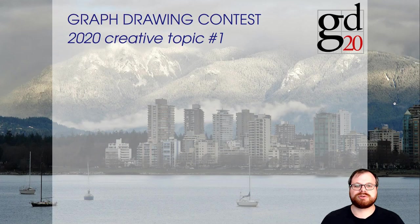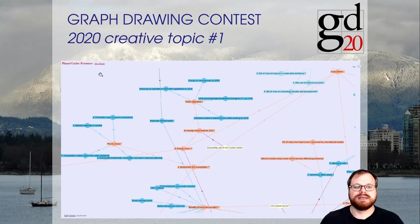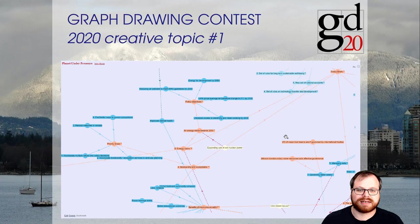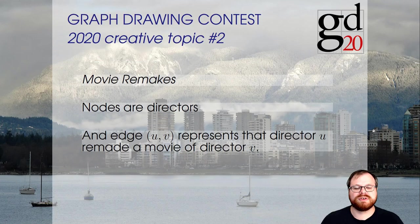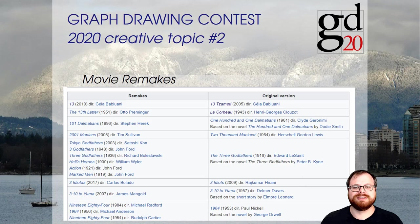The tasks for next year's contest: the first creative topic will be an argumentation map, where nodes are issues, arguments, and facts, and edges specify relationships like support and attack among them. One example is the 'planet under pressure' argumentation map. The second creative topic is about movie remakes, where vertices are directors and there is an edge if one director remade a movie of the other director. Data comes from Wikipedia. We may also add some actors — we are still discussing the details.